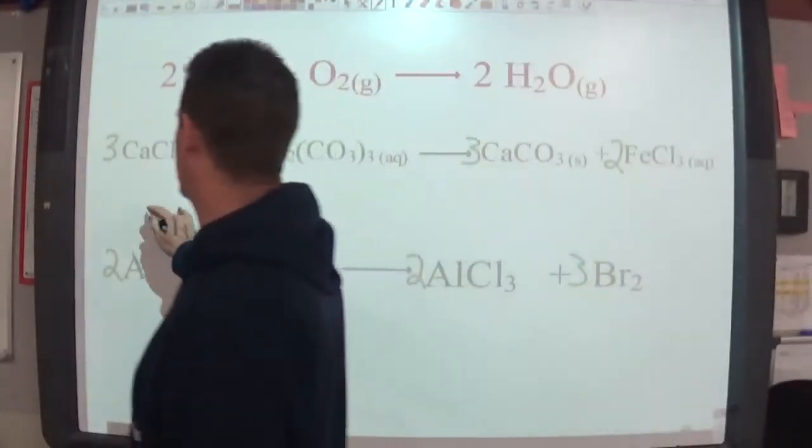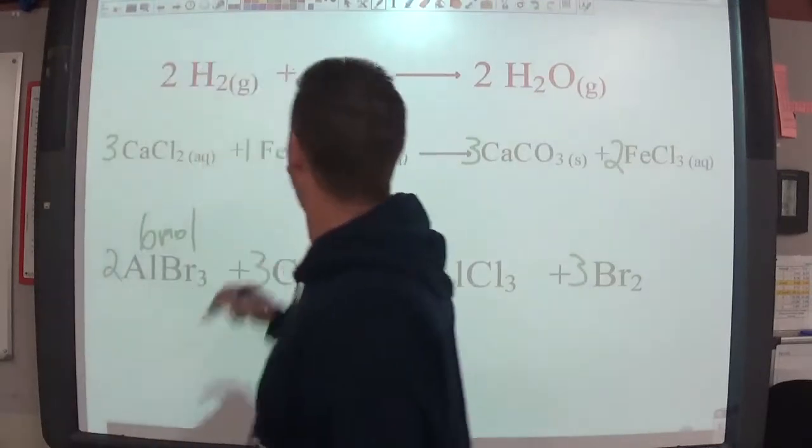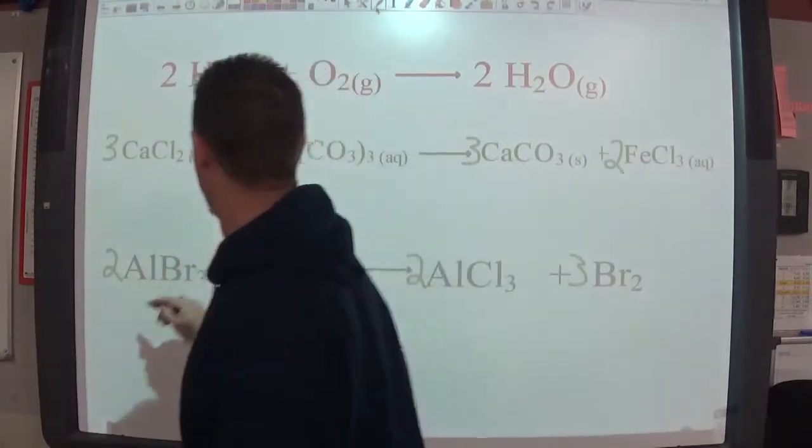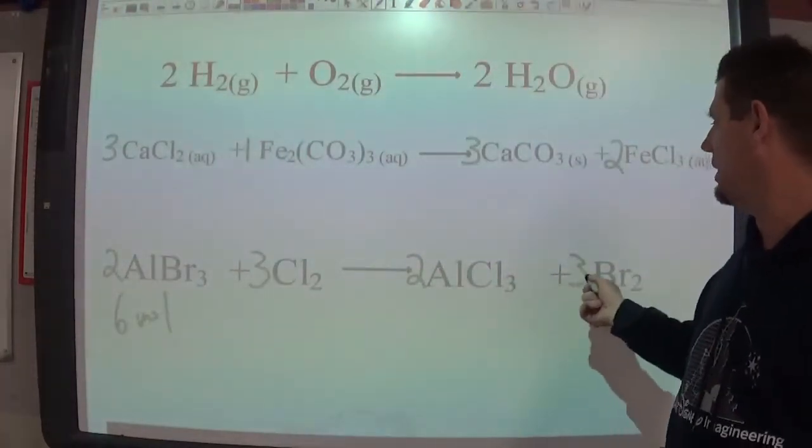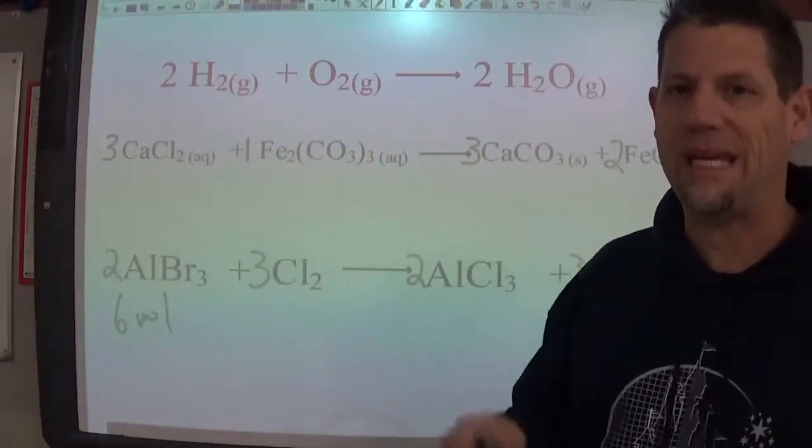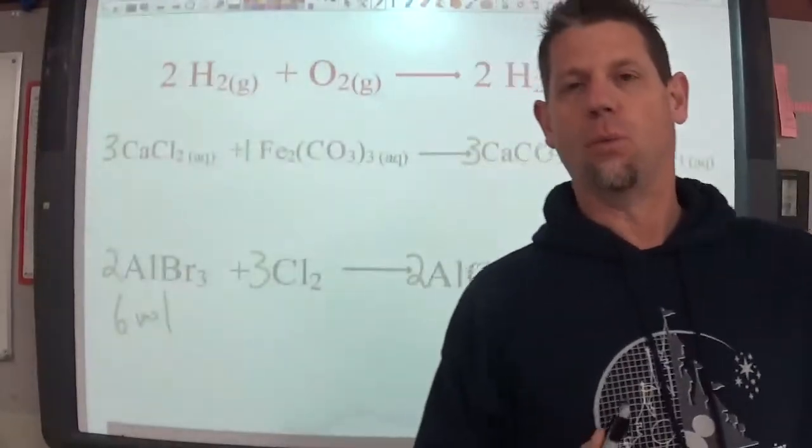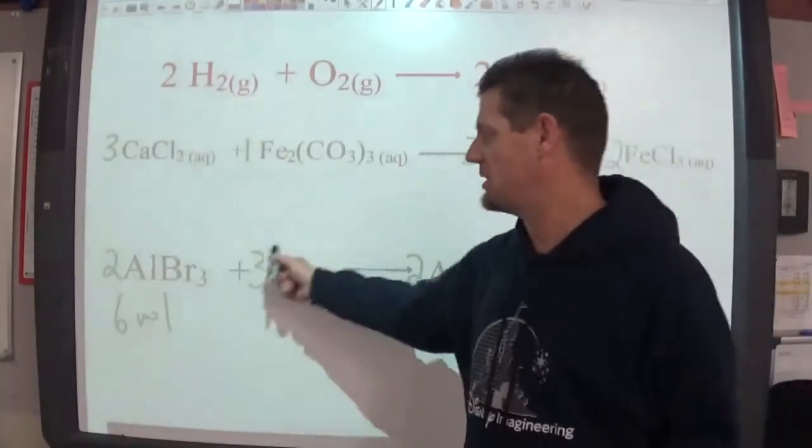But I only have six moles, actually I'm going to write that in a different place. But if I have six moles of aluminum bromide how many moles of bromine element can I get when I do this reaction?